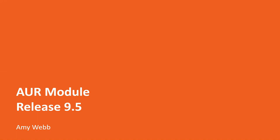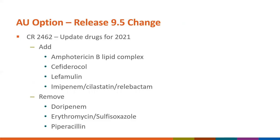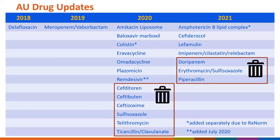I'm Amy Webb, another subject matter expert for the AUR module. I'm going to talk about the NHSN 9.5 AUR module updates scheduled for December. The first main change is for the AU option—we've updated some drugs for 2021. We'll be adding four new drugs and removing three drugs. This slide shows a summary of the last four years of drug changes. For 2020, we added seven new drugs including the mid-year addition of remdesivir and removed six. For 2021, we'll continue that pattern of adding four new drugs and removing three.